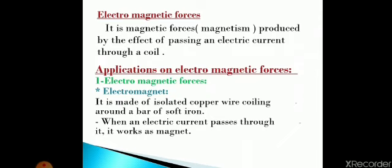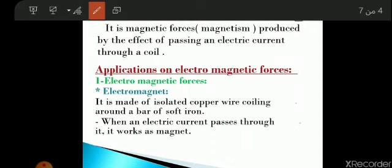Now let's talk about the second point in our lesson: electromagnetic force. Electromagnetic force means magnetic force produced by the effect of passing electric current through a coil.